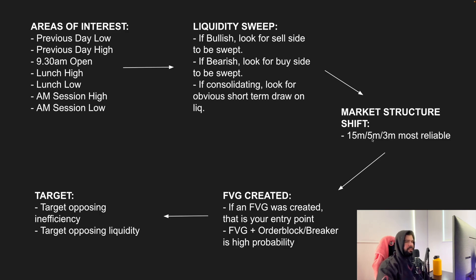I find the 15-minute, 5-minute, and 3-minute charts are the most reliable. It's easy to get lost on sub-3-minute charts - the 3, 2, and 1-minute - with a lot of fakeouts. So 15, 5, and 3 minutes are the most reliable based on my backtesting and live data, with fewer fakeouts intraday. Once a market structure shift has occurred, I'm looking for a fair value gap to be created as the entry point. Place your limit orders in that fair value gap, and the best setups are those that also align with an order block or breaker block.